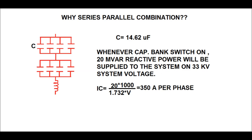If we use a single unit of value 2C = 29.24 microfarad, any failure in that unit would lead to complete shutdown of the capacitor bank. Also, whenever the capacitor bank is switched on in the 33 kV system, it supplies capacitive current to nullify the lagging reactive power in the system.